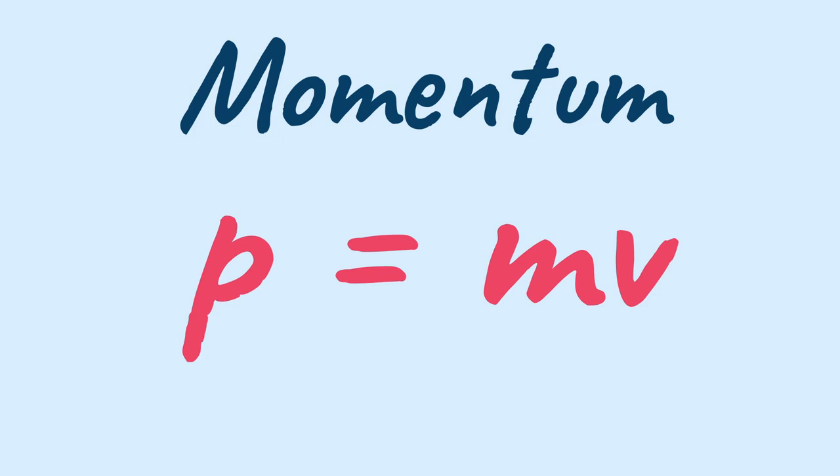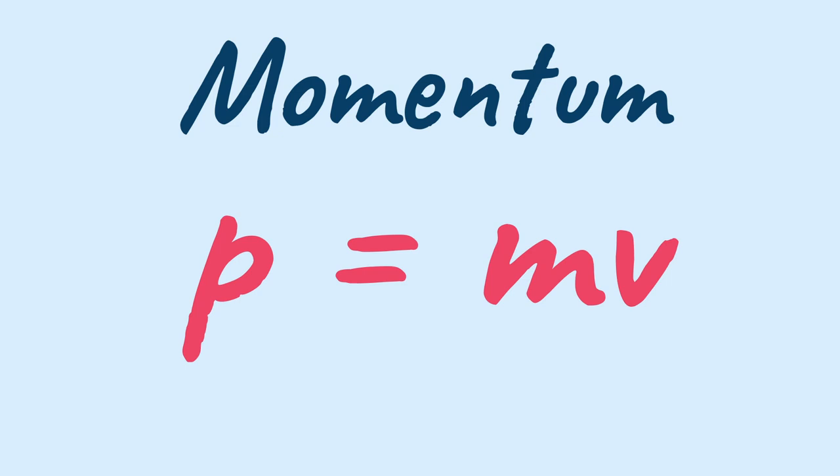Because the formula that we know for the momentum is P equals MV. So now let me tell you when we take the formula P equals MV we must take into consideration that this formula is only applicable for the objects with a rest mass and strictly not for the objects running at near speed light.